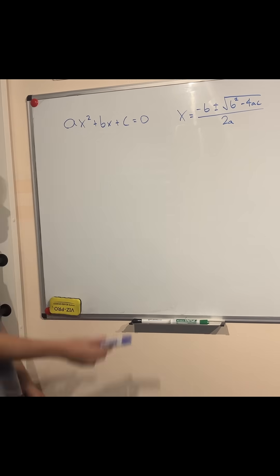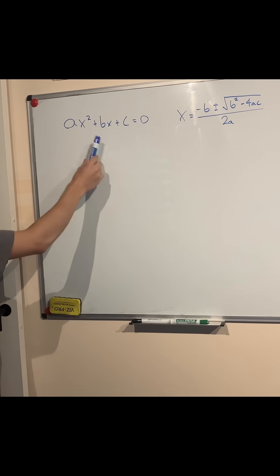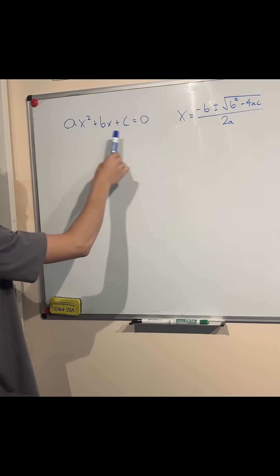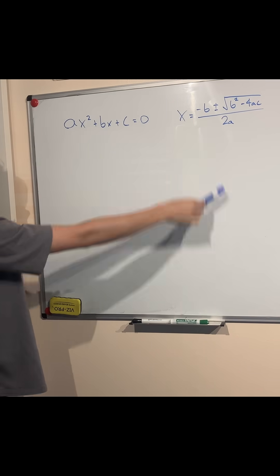Where does the quadratic formula even come from? Well, simply put, it's a result of moving around the terms of a standard quadratic equation in order to get x on one side and no x, only the coefficients of the terms on the other side.